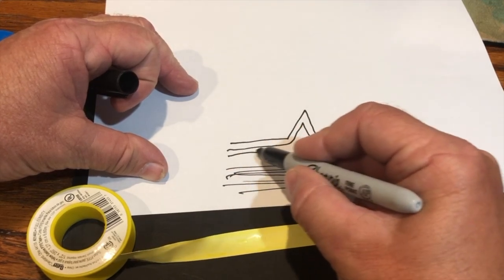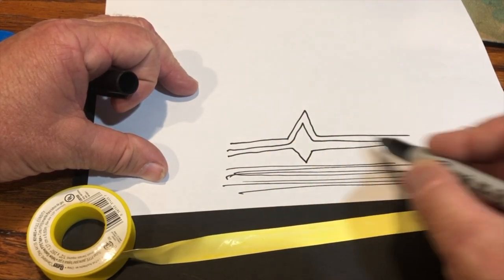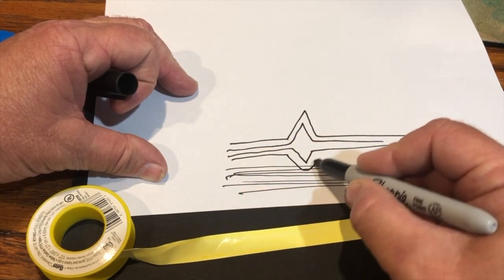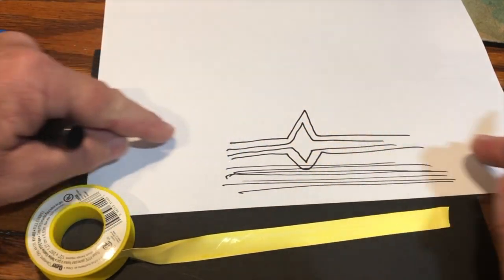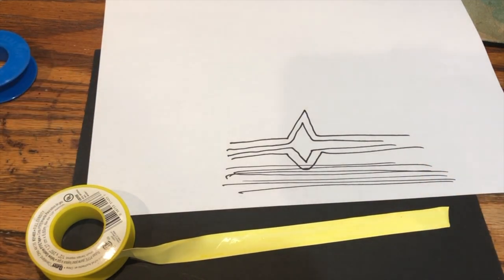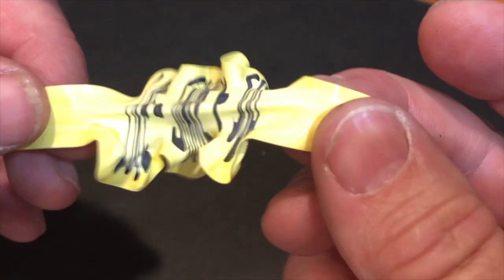Because of this, when the message is written on the tape, then stretched widthwise, the message becomes unreadable. But when the tape is then stretched lengthwise, the message becomes readable, hence secret message. I hope you enjoyed this experiment.